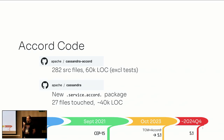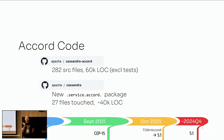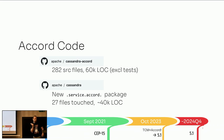In the Cassandra project, which is where its main application is at the moment, outside of the service Accord package that has been introduced, we have only touched 27 files. You can see that it is quite a new addition to the Cassandra project and not touching or bloating too much of the existing codebase.